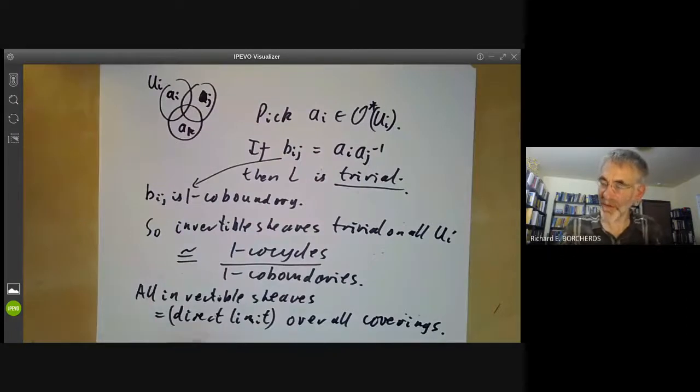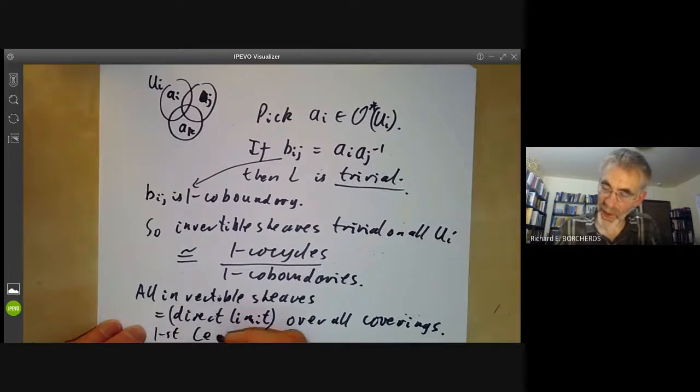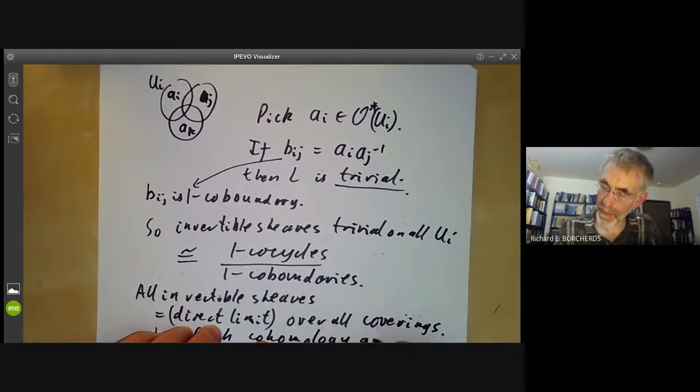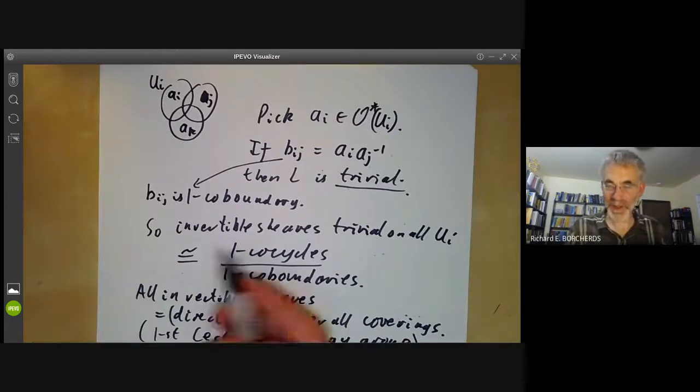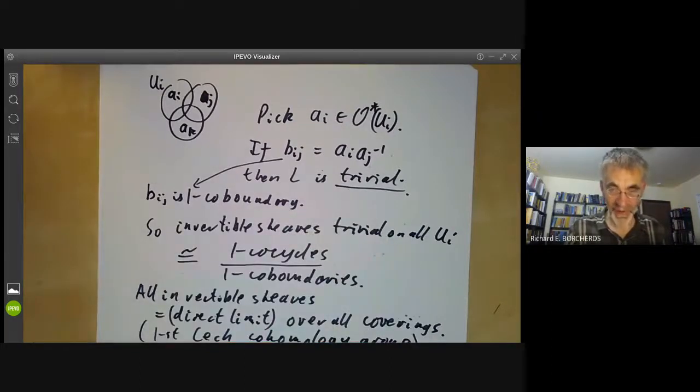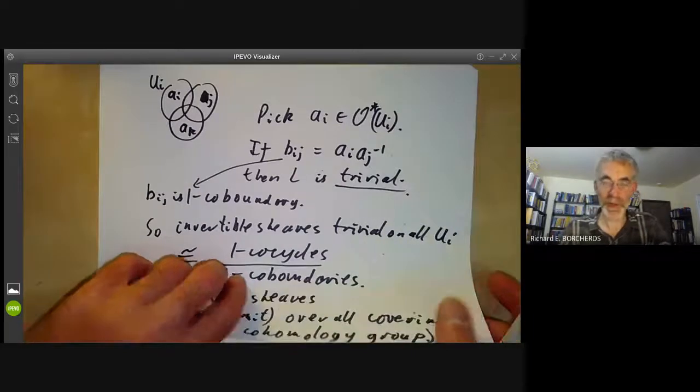To find all invertible sheaves is a sort of direct limit of this over all coverings. We won't actually need to take this direct limit because we'll start with a covering on which all invertible sheaves are trivial. But what we've actually defined is the first Čech cohomology group. The first Čech cohomology group arises very naturally if you try and classify line bundles over a scheme or for that matter over any ringed space. Line bundles or invertible sheaves are classified exactly by the elements of this direct limit, which is by definition the Čech cohomology group.